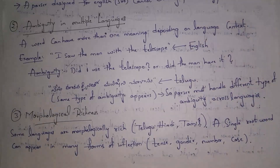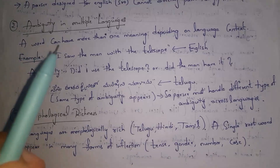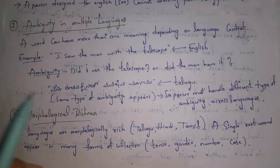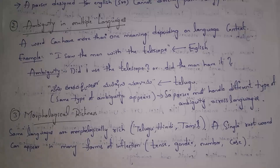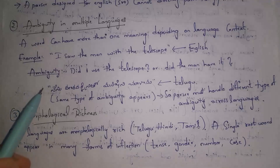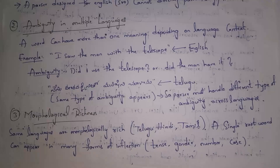The second issue is ambiguity in multiple languages. One word or sentence can have multiple meanings. For example, the sentence 'I saw the man with the telescope' has two meanings: either I used a telescope to see the man, or the man had the telescope. Based on context, the parser needs to decide which is correct. Similarly, in Telugu, the same type of ambiguity appears. A parser designed for English can handle only English language ambiguities but cannot handle Telugu or other language ambiguities.